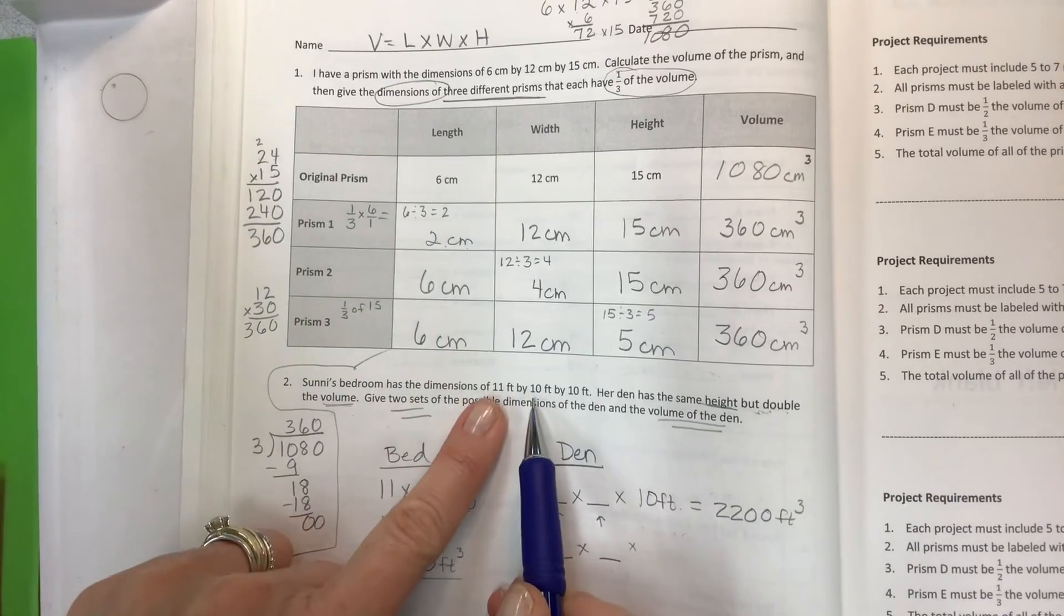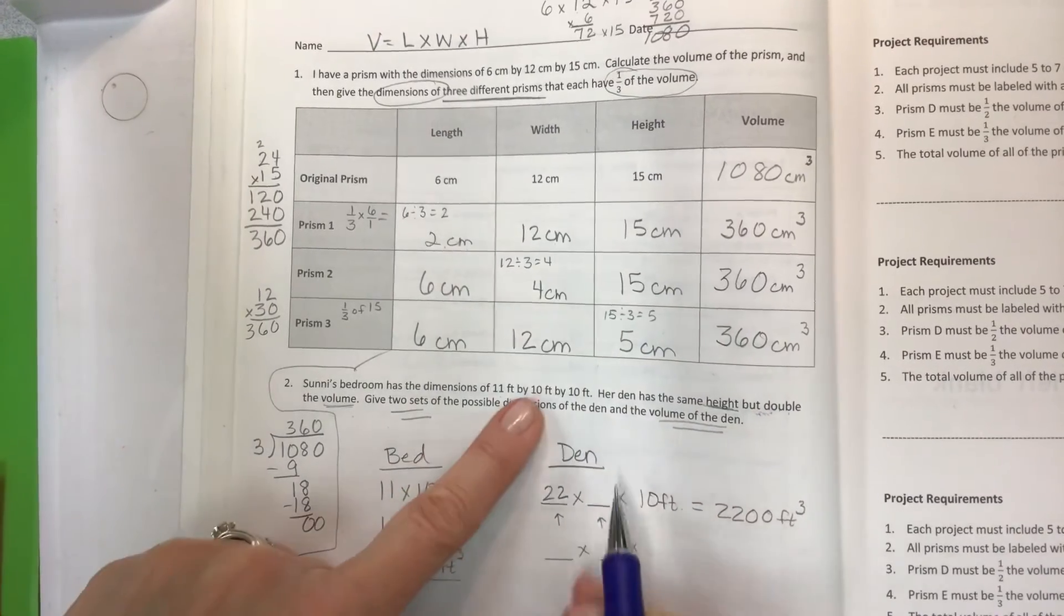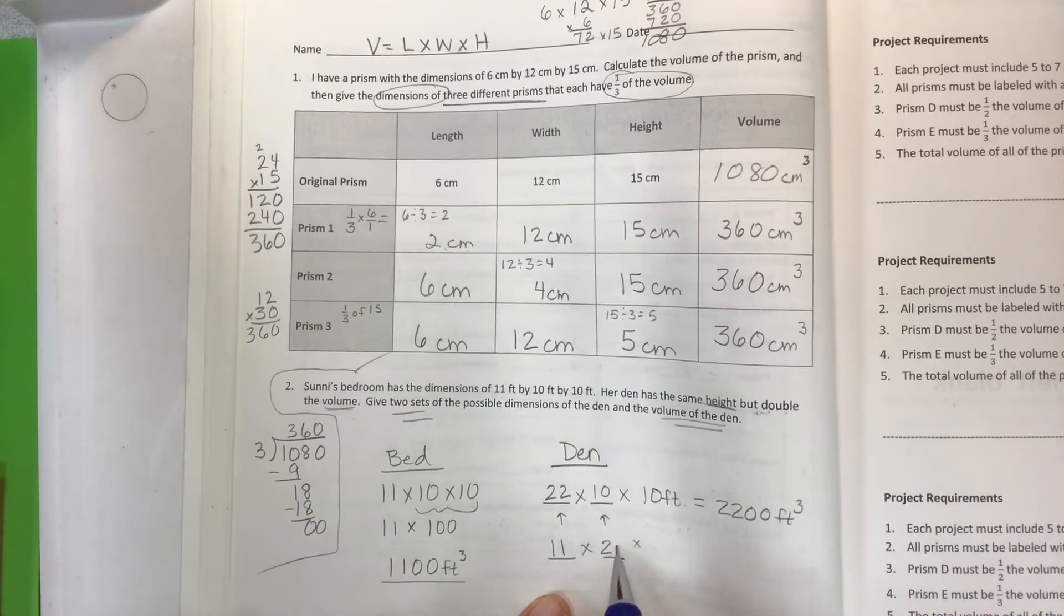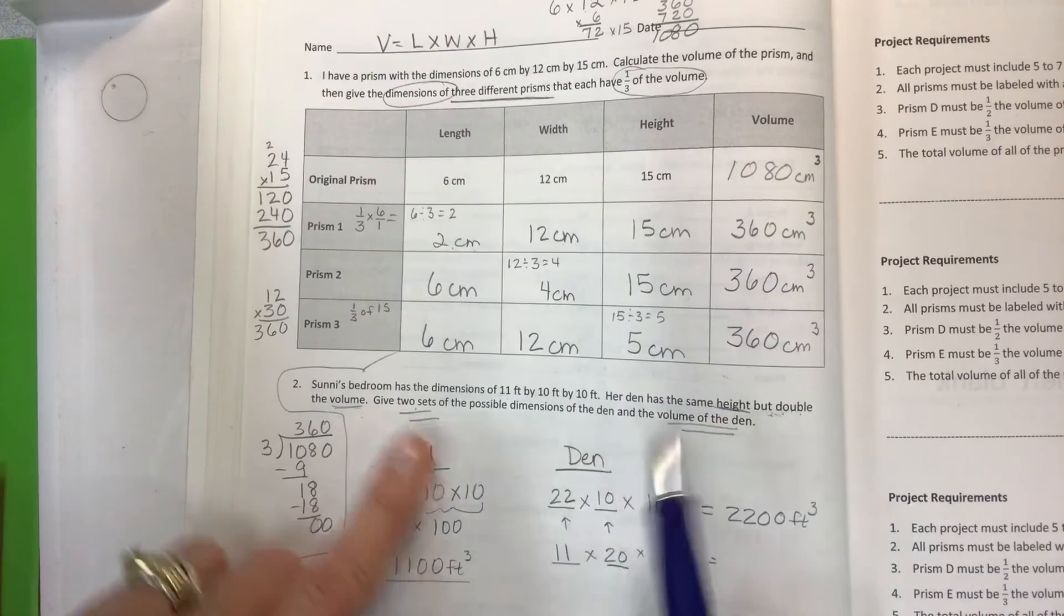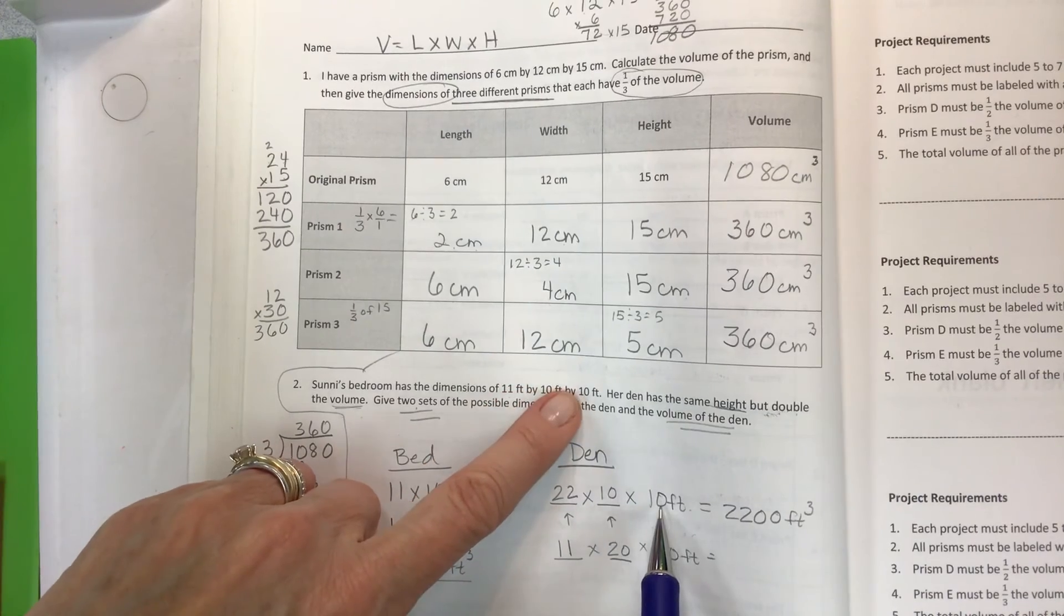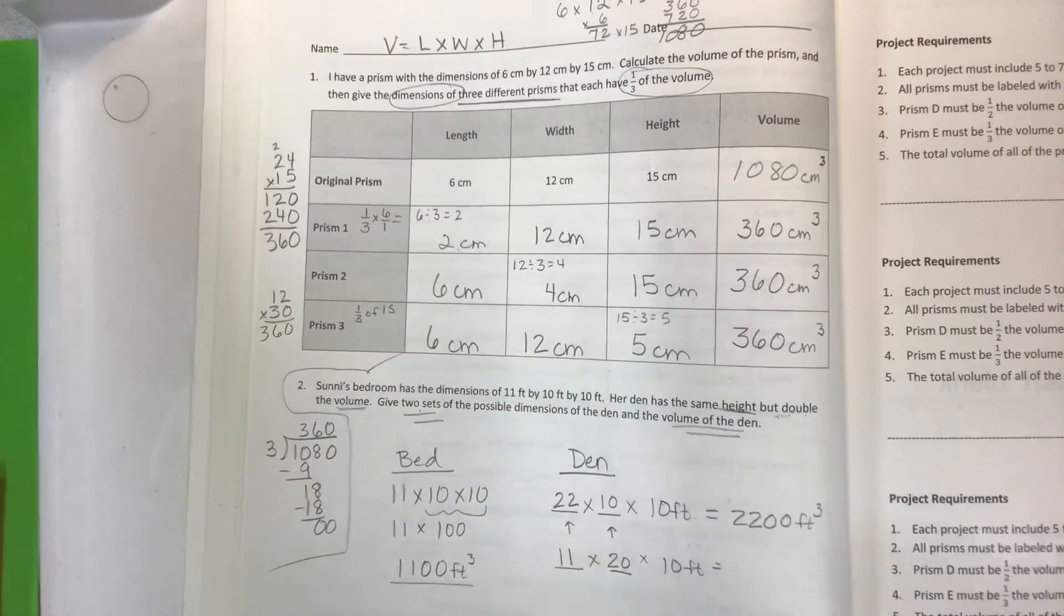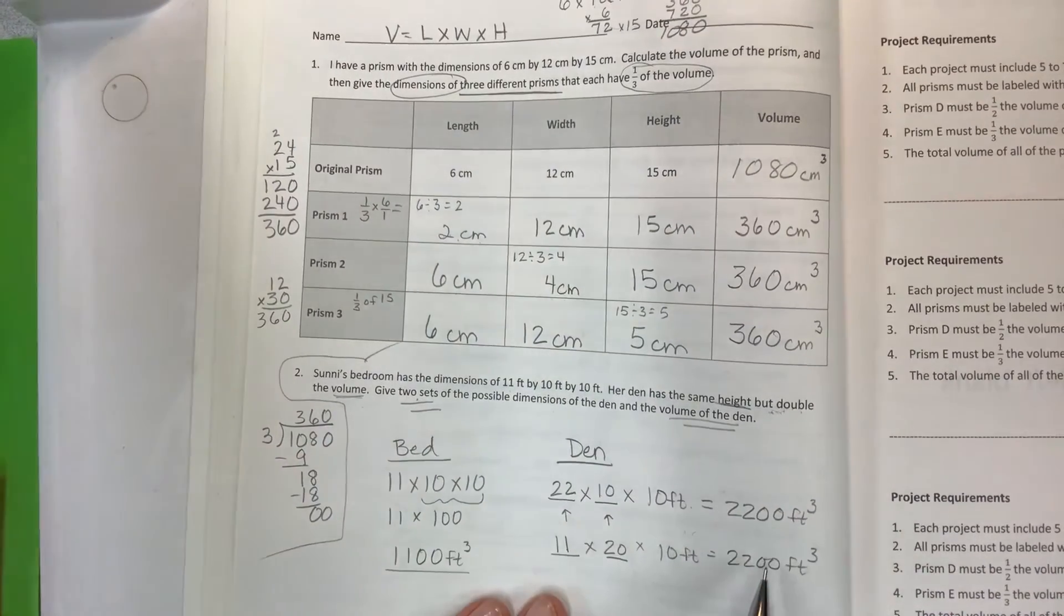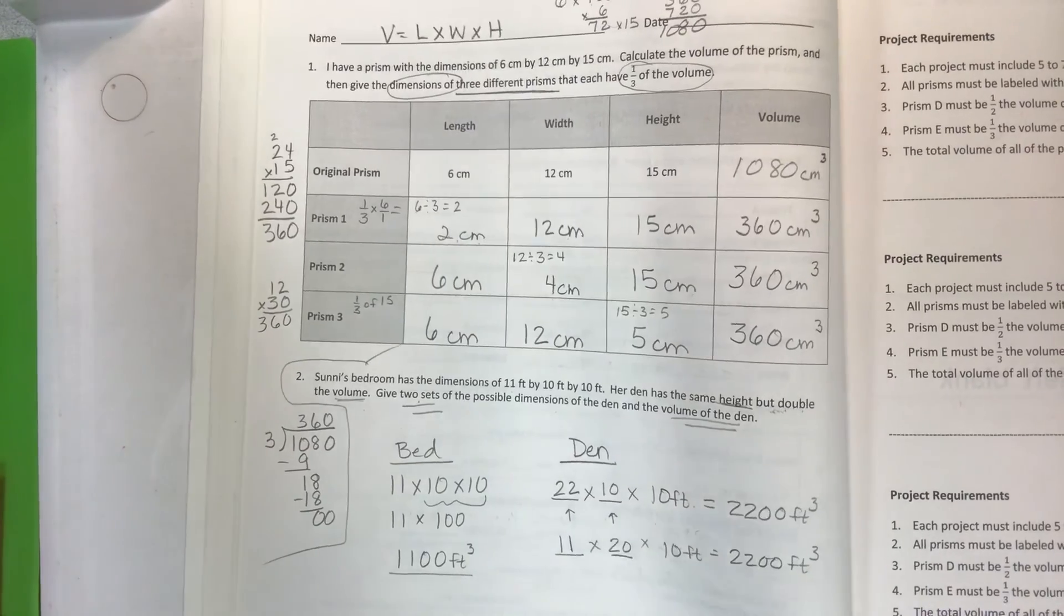So what are my possibilities? I can double the first one, so 11 times 2 is 22, but I would have to keep this the same. Or I could keep it at 11 and double this one. So the two possible dimensions of the den could be with the length doubled but the others the same, or keep the length the same, double the width, and then keep the length and the height the same. Either way you will end up with the appropriate volume of the den, which is double, because we're using the parameters they gave us—the height—and then we're only changing one dimension at a time.